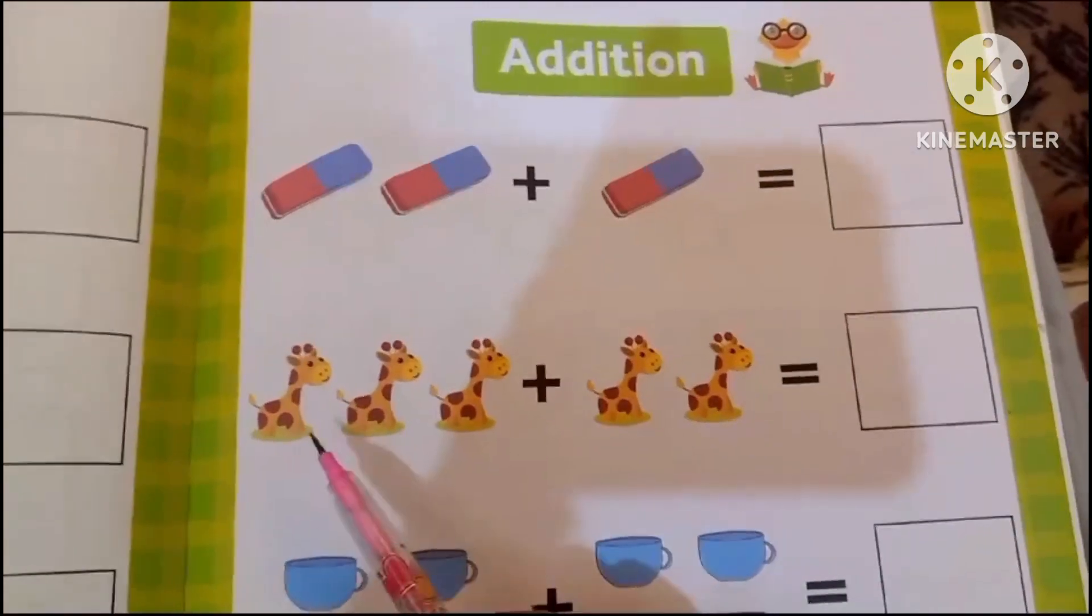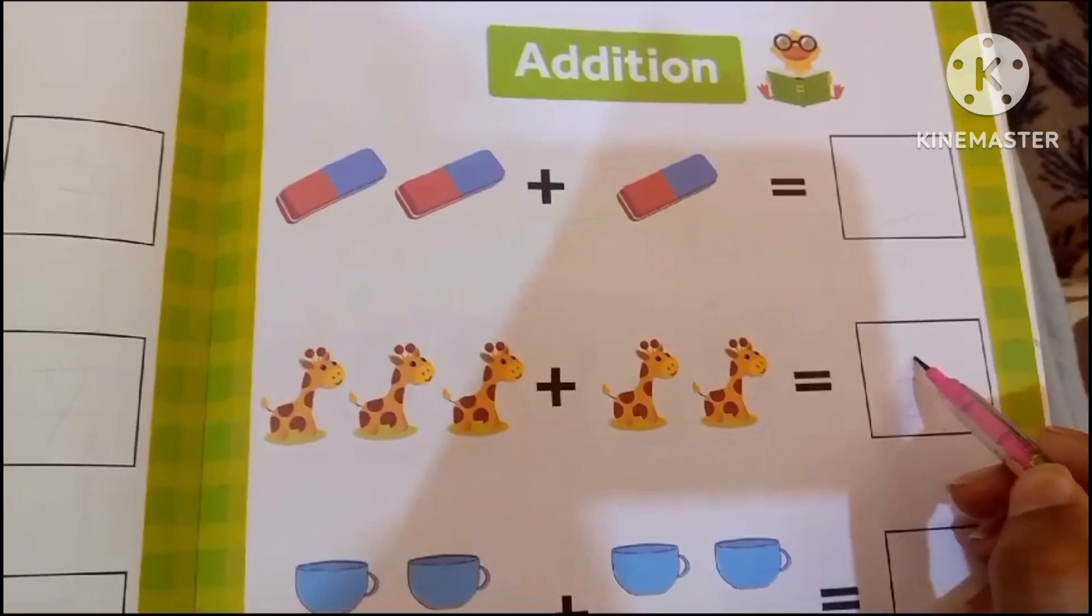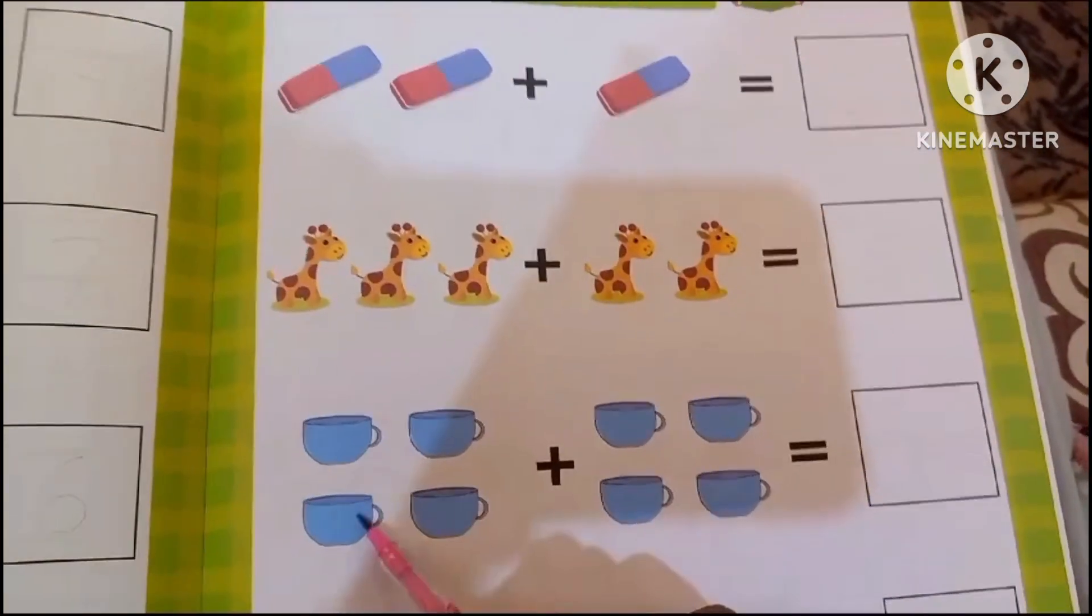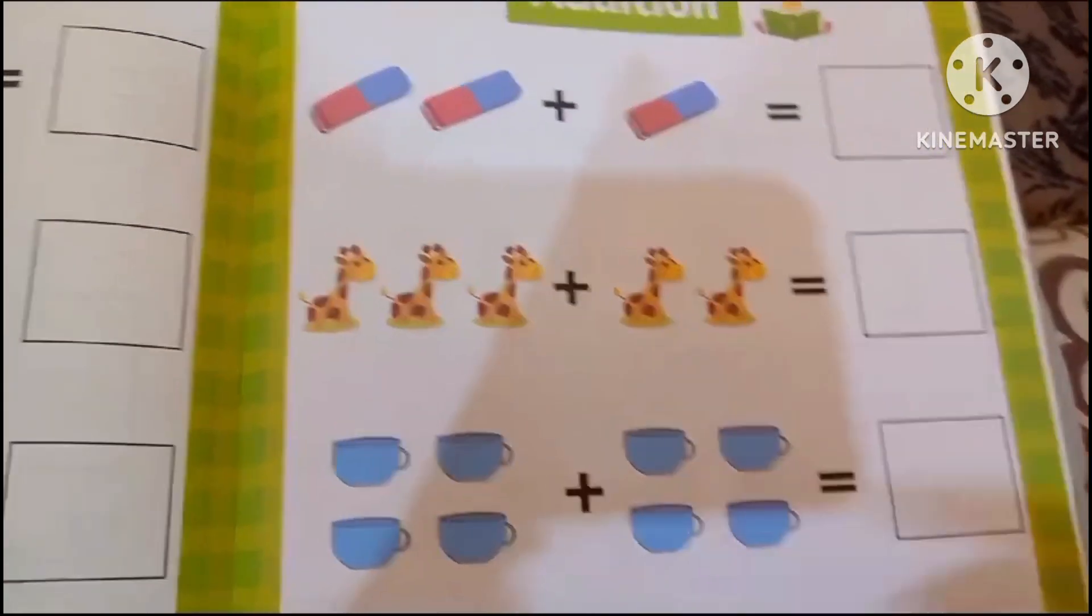How many giraffes? 1, 2, 3, 4, 5... 1, 2, 3, 4 plus 5, 6, 7, 8.